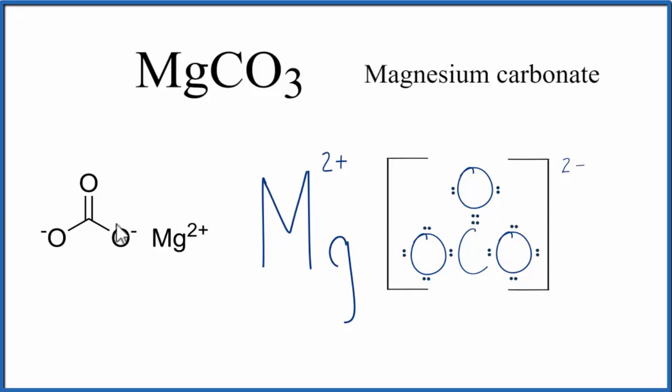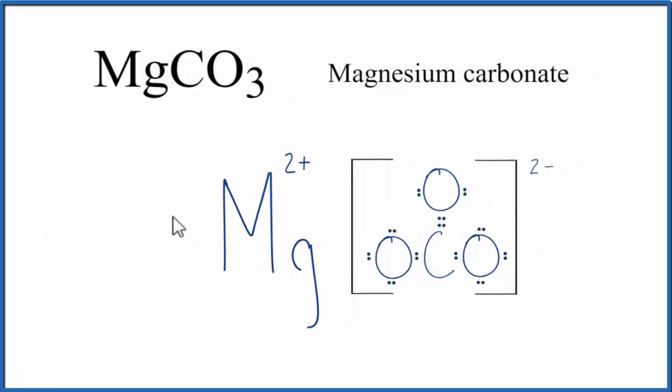For the negative 2, we can see the negative charges, those reside on these single bonded oxygens. This is Dr. B with the Lewis structure for MgCO3, magnesium carbonate, and thanks for watching.